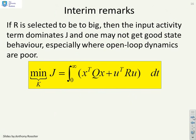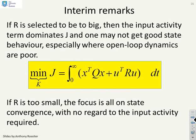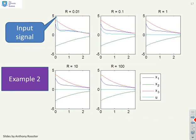We've said that now. If R is too small, the focus is all on state convergence, and the danger of making R too small is that you have no regard to the input activity. So the input may be aggressive, and you'll see that here with a three-state example.